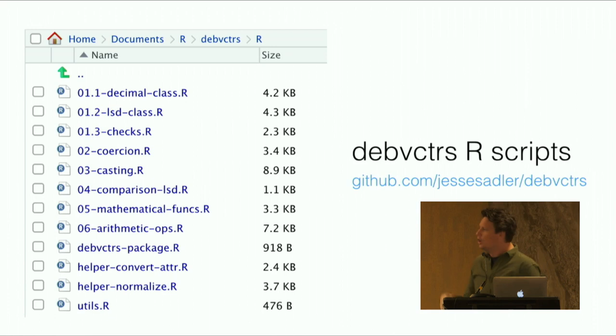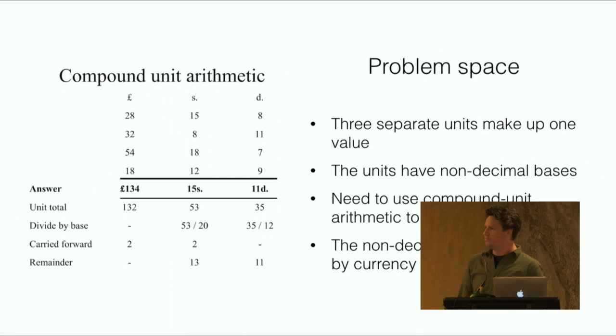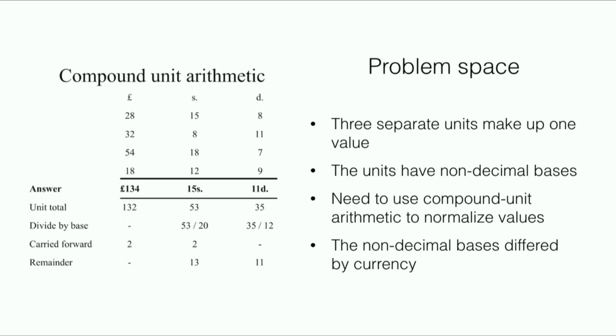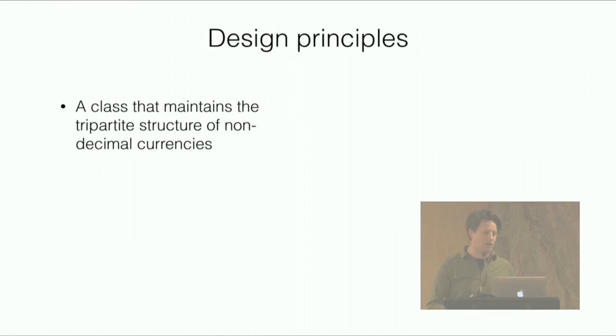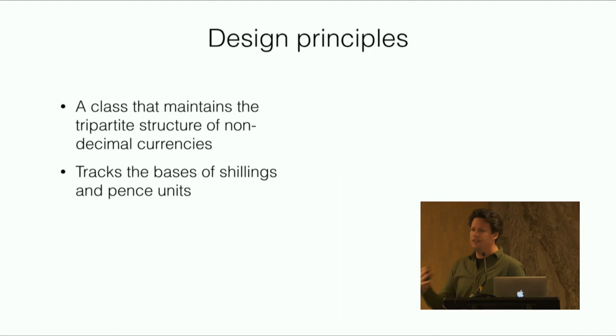Let's go through some of the choices I made with deb keeper slash deb vectors. Just as a reminder, to go back to our problem space, we have to deal with these issues of compound unit arithmetic of representing a single value with three different numbers. In designing this, I thought about different things. I didn't want to just decimalize everything - I wanted to maintain the structure of the numbers. I wanted to keep track of the bases of the shillings and pence because they could differ.